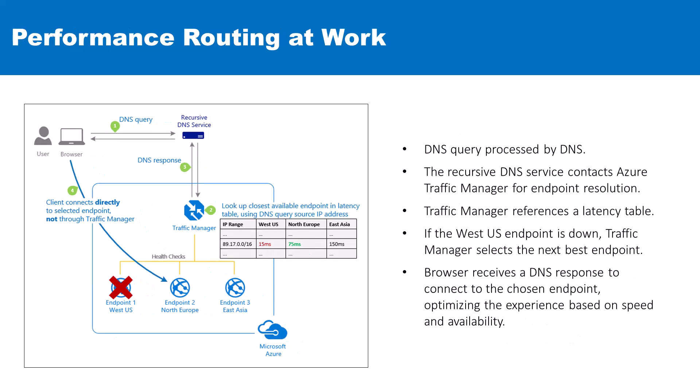In this image, we have the performance routing method within Azure Traffic Manager. This process begins when a user's browser issues a DNS query, which is first handled by a recursive DNS service. The service then engages Traffic Manager to determine the optimal endpoint. Traffic Manager uses a latency table, mapping the user's source IP address to the nearest endpoint with the least latency.